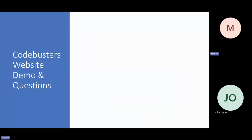That is all I have to talk about with each cipher. If you have questions later on, you can go to the Macomb website and submit a question — it'll come to me, and I can answer it and post it on the website for everybody to see. Thank you for coming tonight, good luck in your events, and I'll see you at your invitationals and at the regionals. Have a good night.